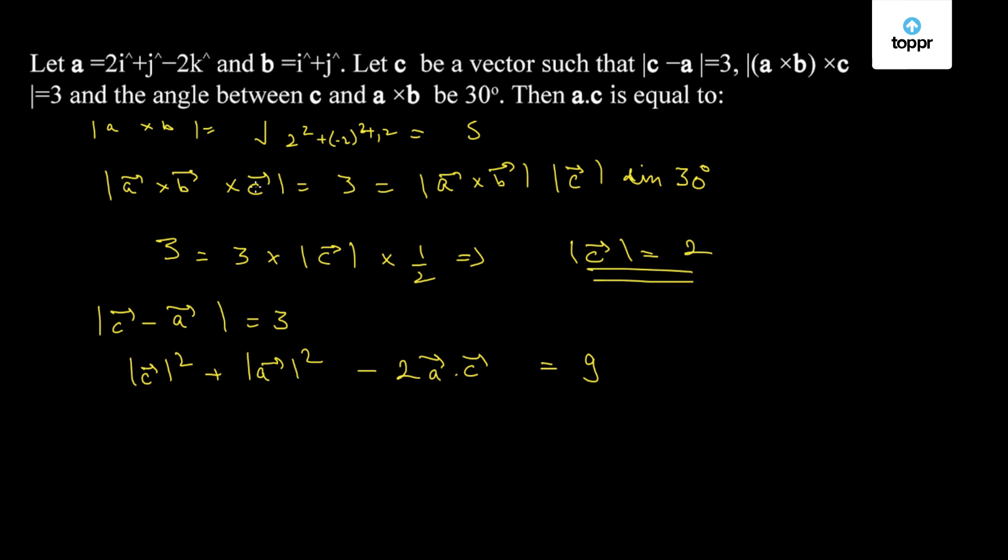Now, mod of c equal to 2 and mod of a we calculated is 3. So, we have 2 square plus 3 square minus twice a dot c equal to 9. So, we have a bar dot c bar equal to 2. Thank you.